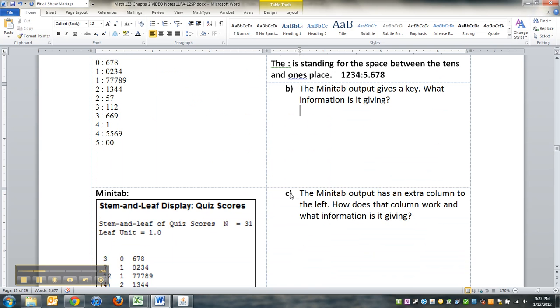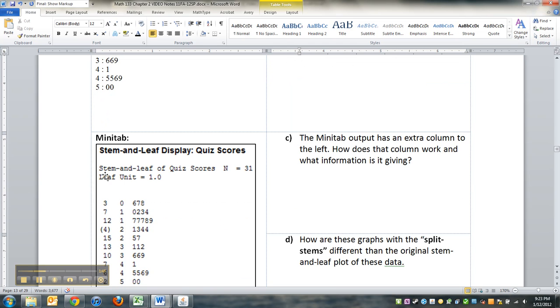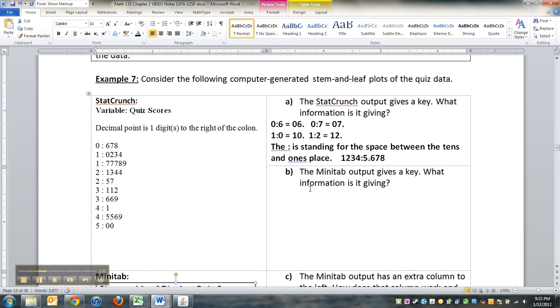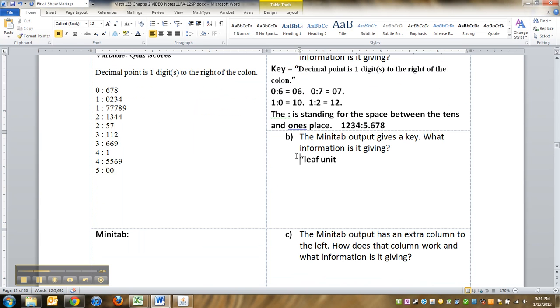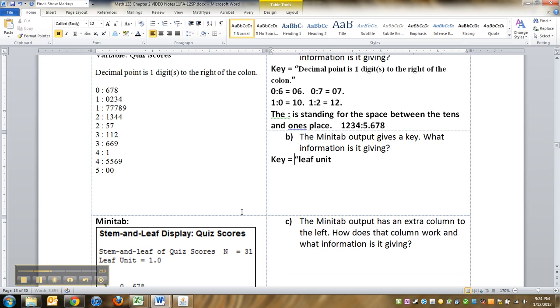Now what about Minitab? Minitab tells us that the leaf unit is one. In other words, they write the leaf unit. Oh I should have said what the key was. Hold on. All right there we go. So the key for StatCrunch was that decimal point is to the one right, blah blah blah. And for this one, for Minitab, the key is that the leaf unit is equal to one point zero.